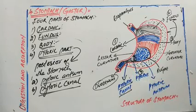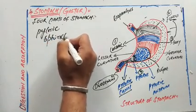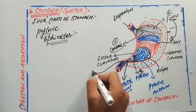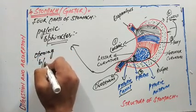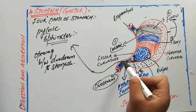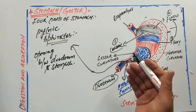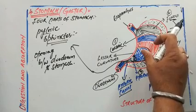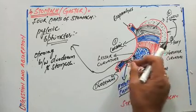The pyloric sphincter is present after the pyloric canal. It guards the opening between the stomach and the duodenum. It periodically permits the partial digestion of food to pass from the stomach to the duodenum.